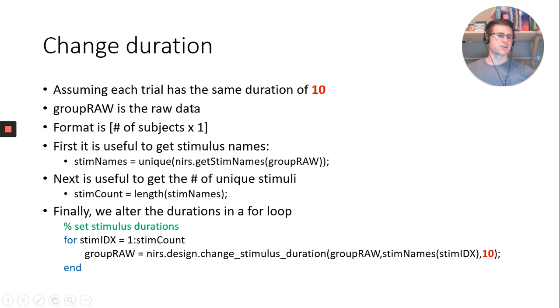If you want to change it, which is the whole point of this, we're going to assume we have a duration of 10 seconds. It just so happens we did. We're also going to assume that groupRAW is the name of my raw data. The format of this raw data is the number of subjects by one column. So if I have 10 subjects, I have 10 rows in a cell and one column. So first, it's likely you're going to want the stimulus names. You can always change the stimulus names, that's covered in another video. But we want to extract the stimulus names and see what they're called.